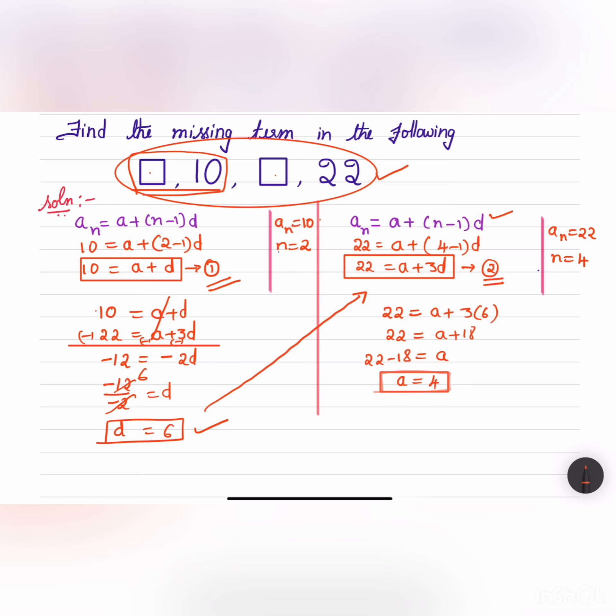To get the first and the third term in the AP, a itself is the first term. So first term is 4 and the third term will be adding 6 to this. So 10 plus 6 is 16. So third term is 16.